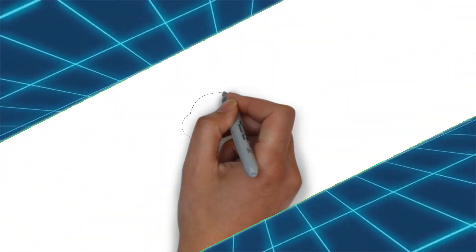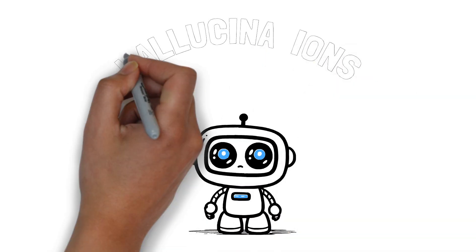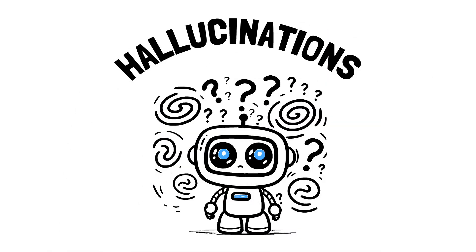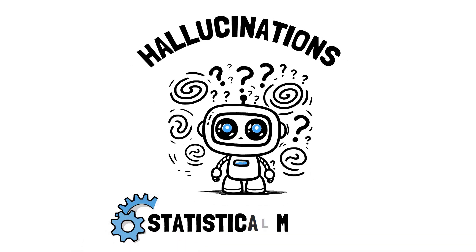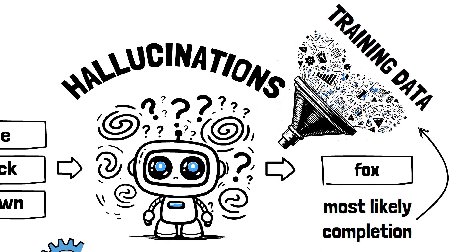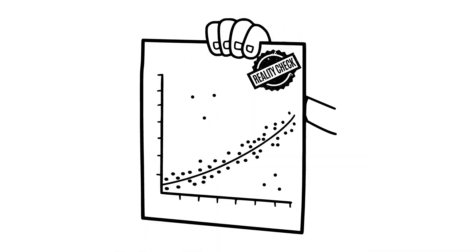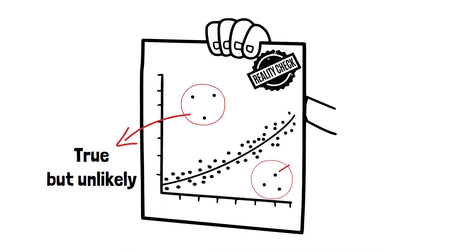A good place to start is to reframe what we mean by hallucinations and why they happen in all LLMs. It's common to personify LLMs, saying that they hallucinate when they produce false or misleading information, but LLMs don't think or see the world as we do. They are just statistical models trained to generate likely completions based on their training data, and reality doesn't always follow smooth probability distributions. Some statements are true but unlikely, and some are false but appear plausible.